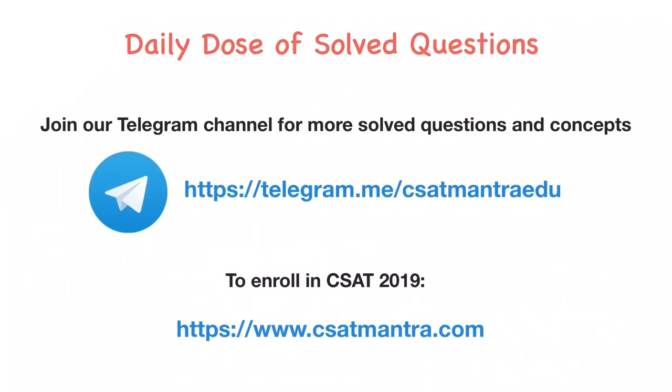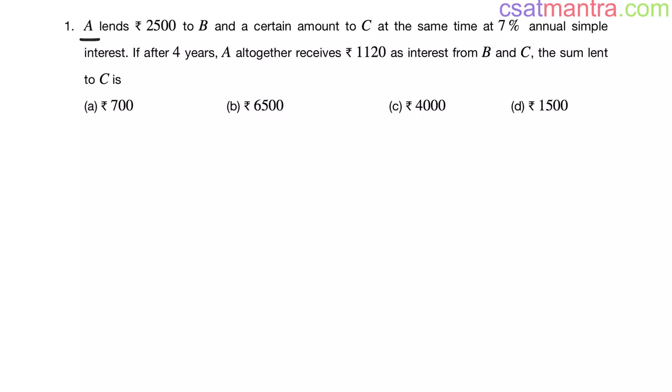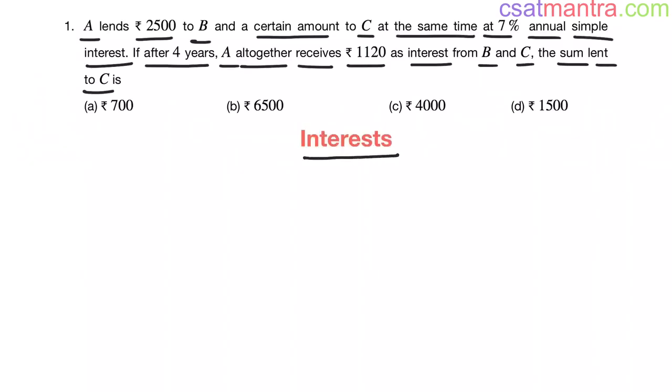Both the links are given below in the description. A lends 2500 to B and a certain amount to C at the same time at 7% annual simple interest. If after 4 years, A altogether receives 1120 as interest from B and C, then sum lent to C is. This question is from interest chapter, you can expect similar questions in CSAT.